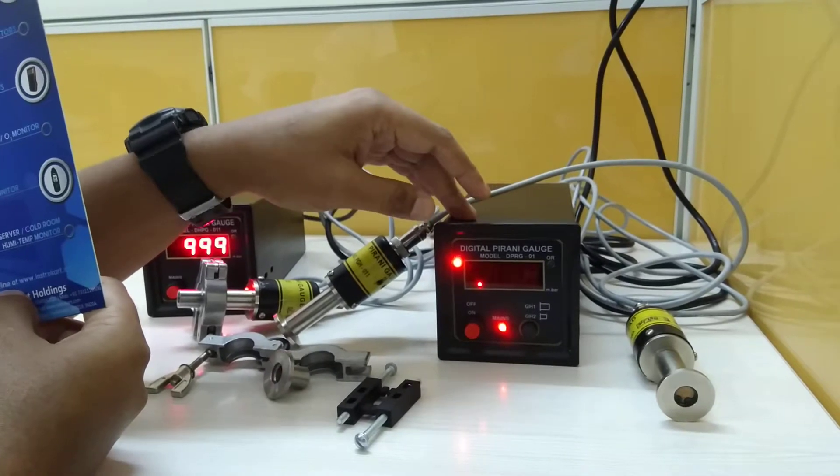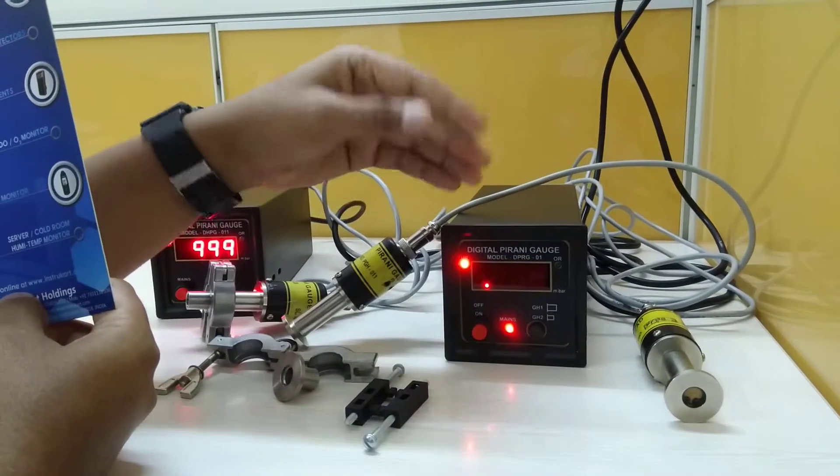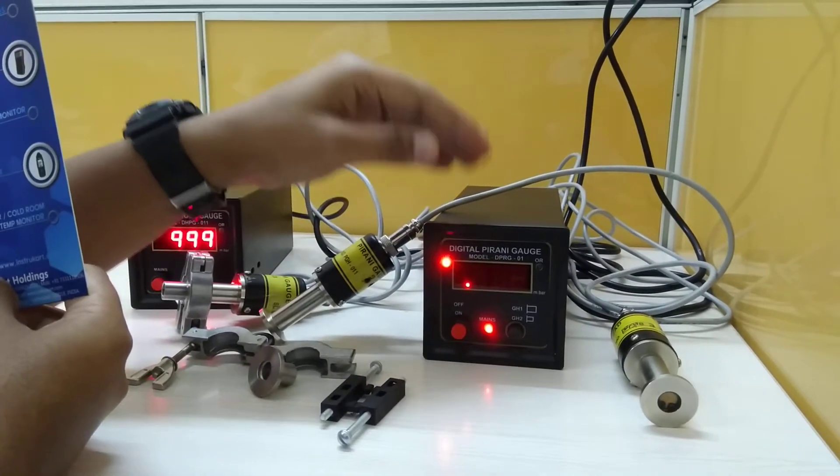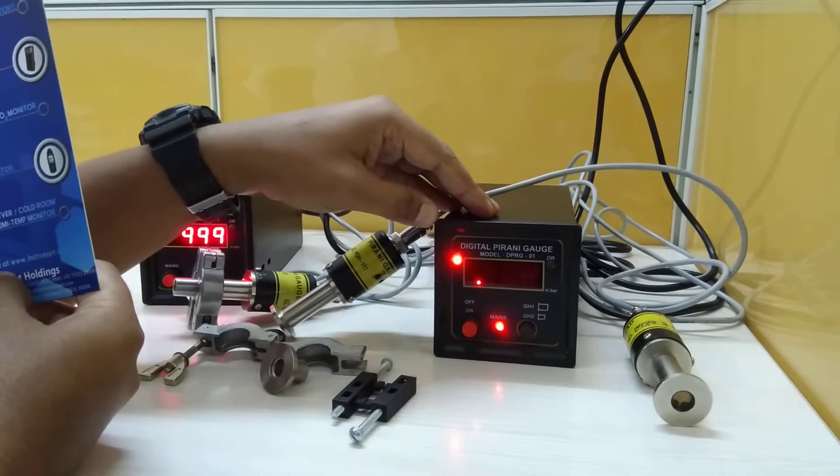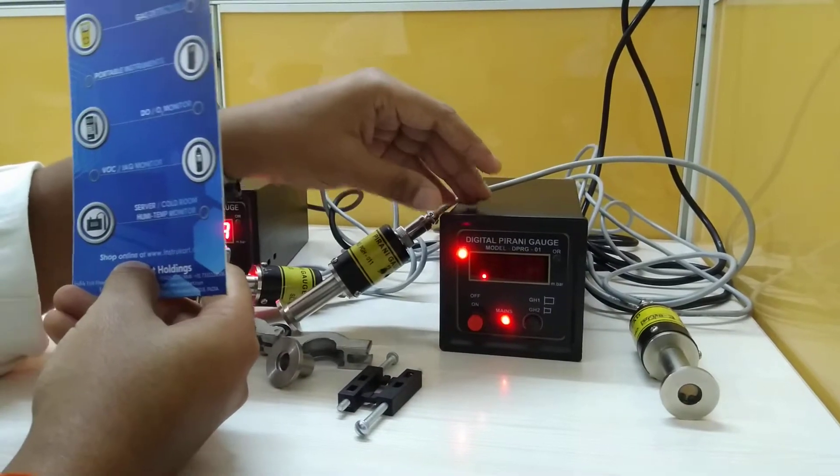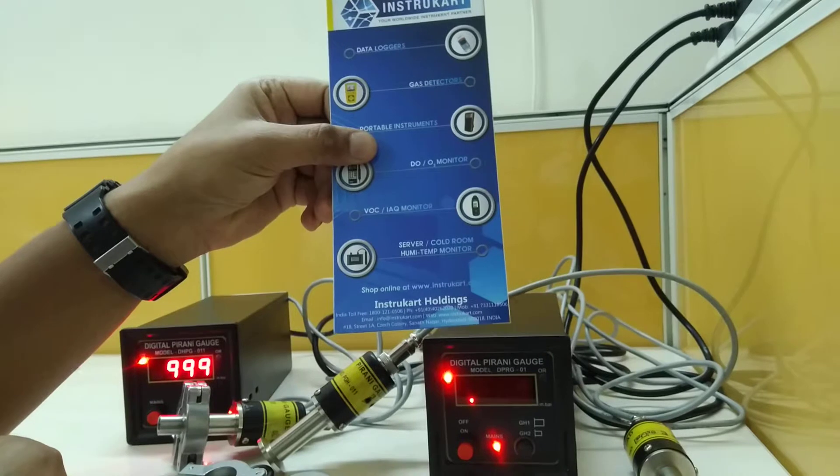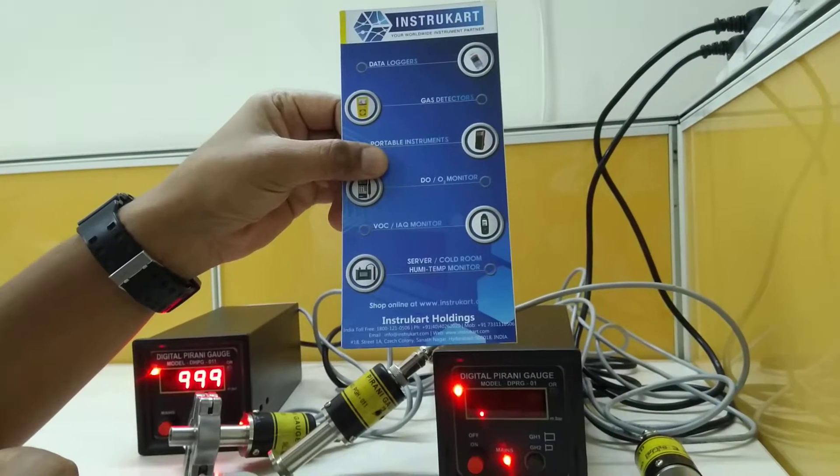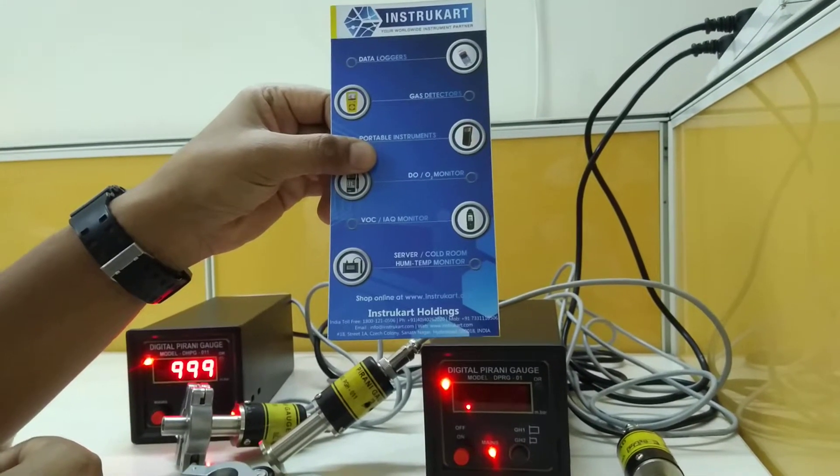A set point controller Pirani gauge will help in triggering any action if you want to control any other equipment based on a certain vacuum range or set point. For more information on these Pirani gauges, you can visit www.instrucart.com and see various vacuum-related instruments. Thanks.